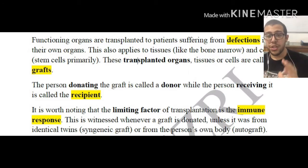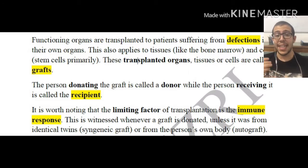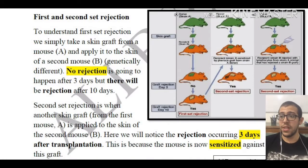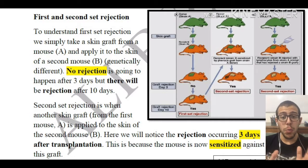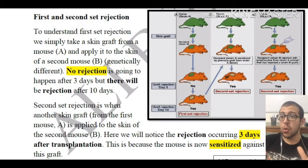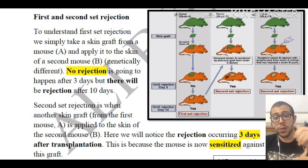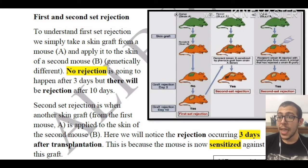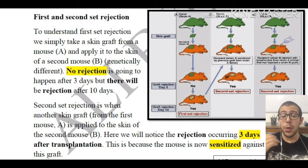Now let's get into the gist of this video: the first and second set rejection. To understand the first set rejection, we take a skin graft from a mouse. We are studying two different mice — mouse A and mouse B. We take some skin cells from mouse A and apply them to the skin of mouse B. It is worth noting that these two mice are genetically different.